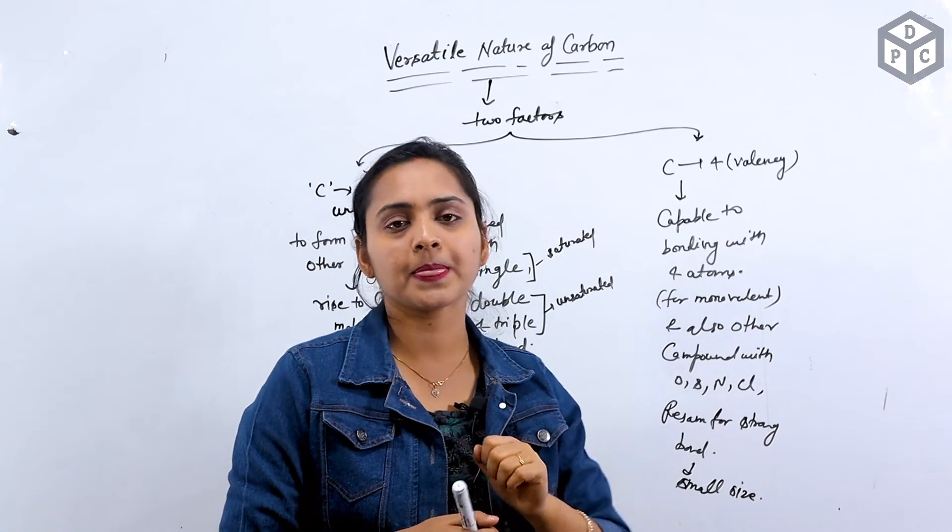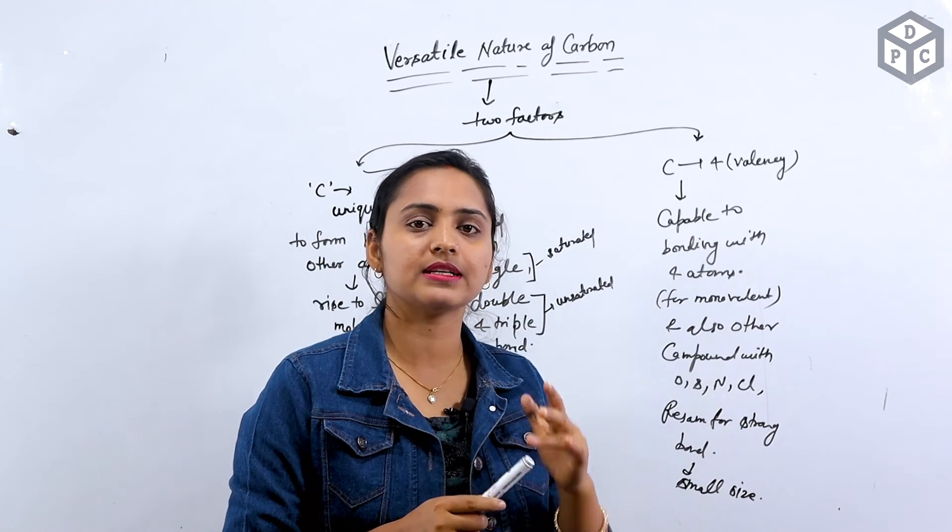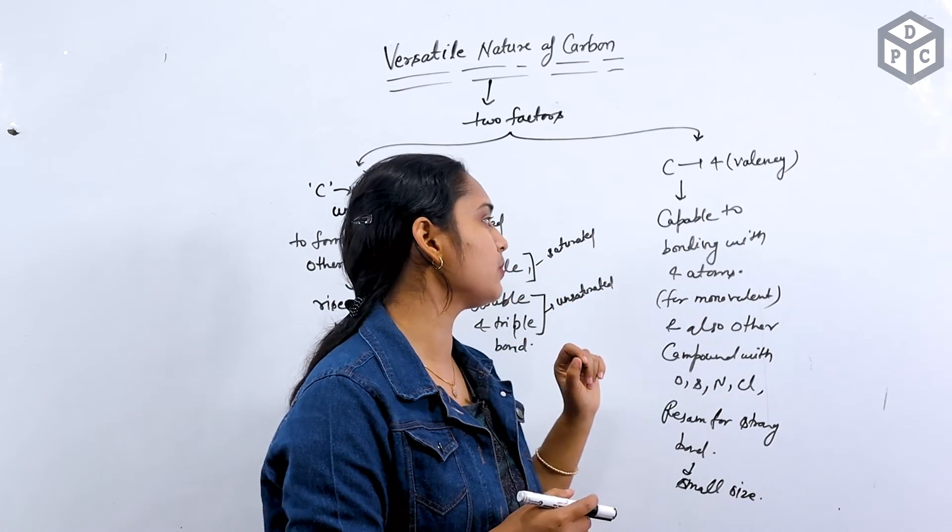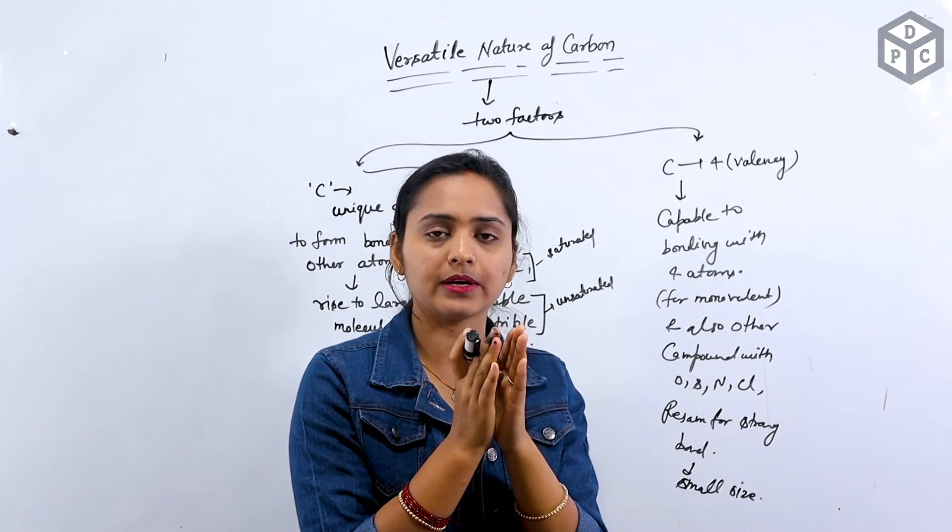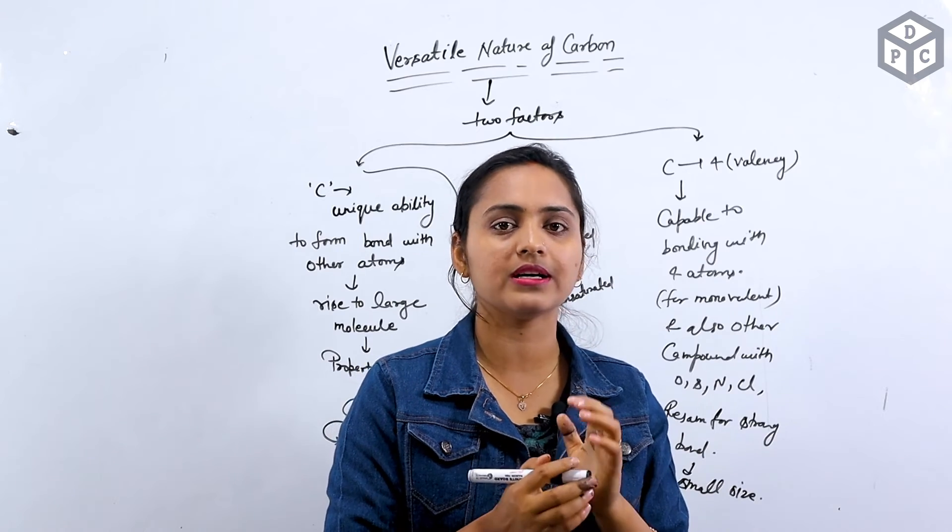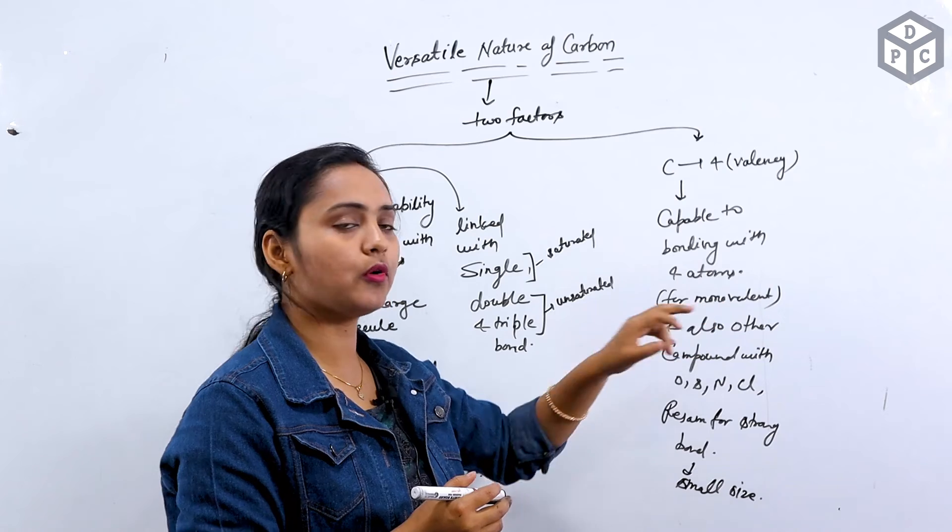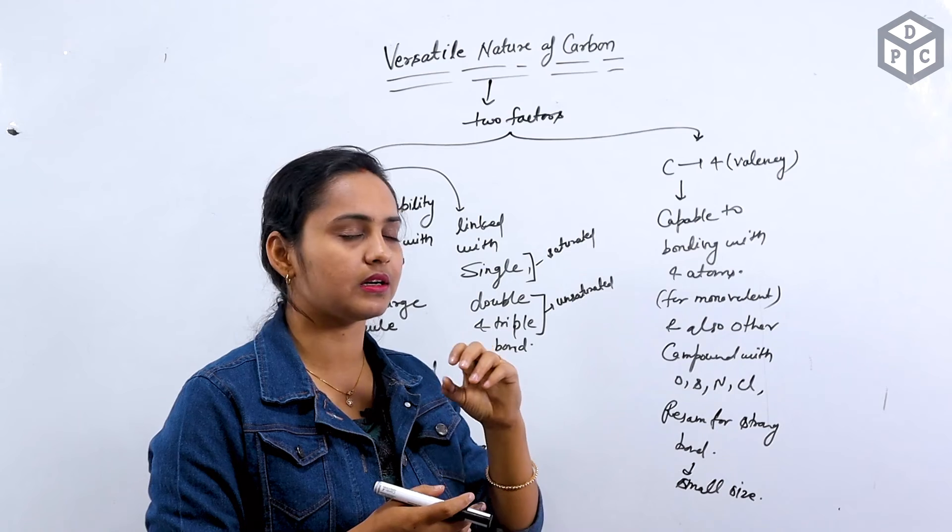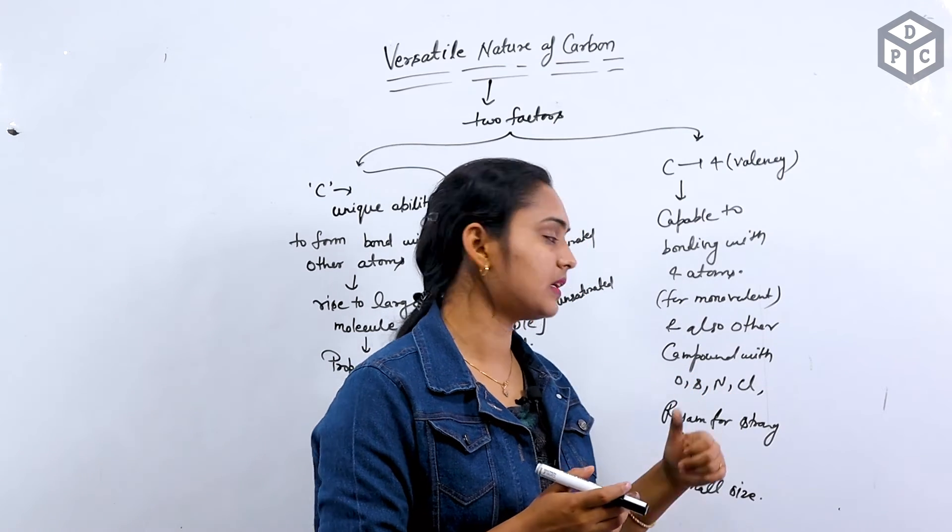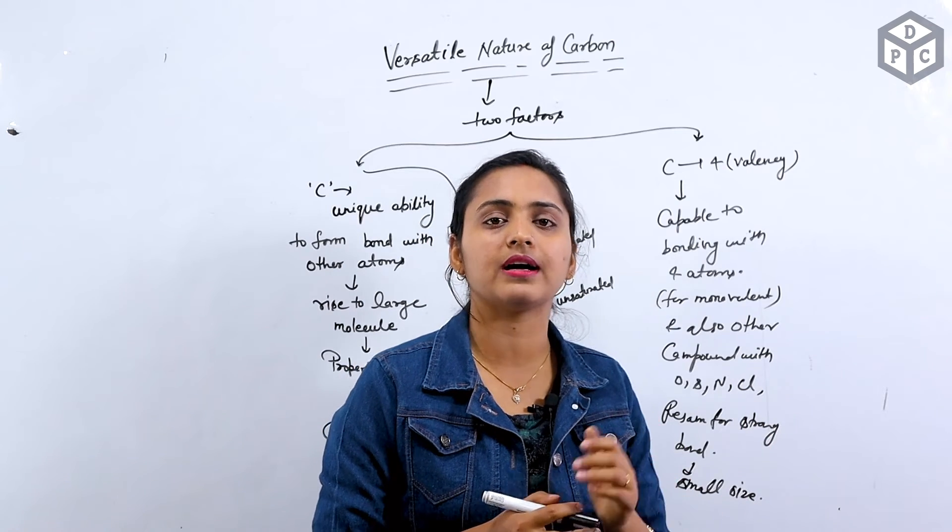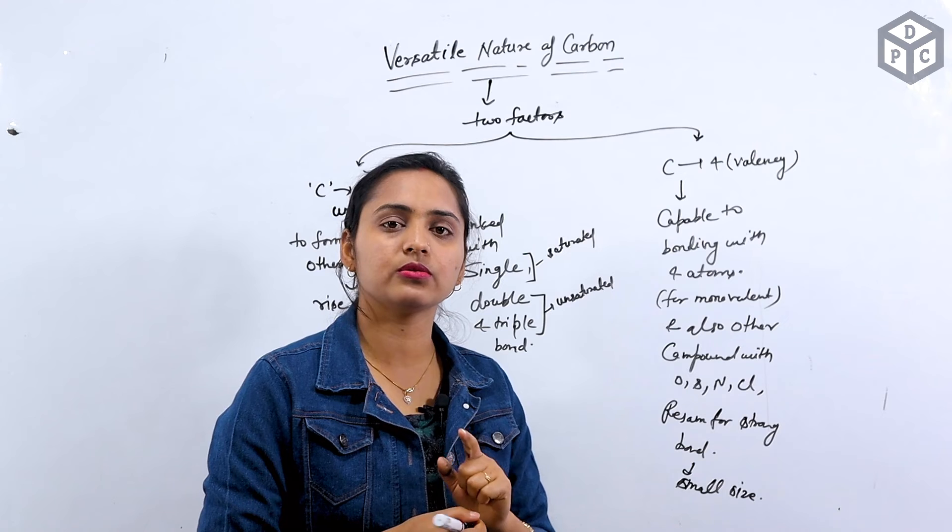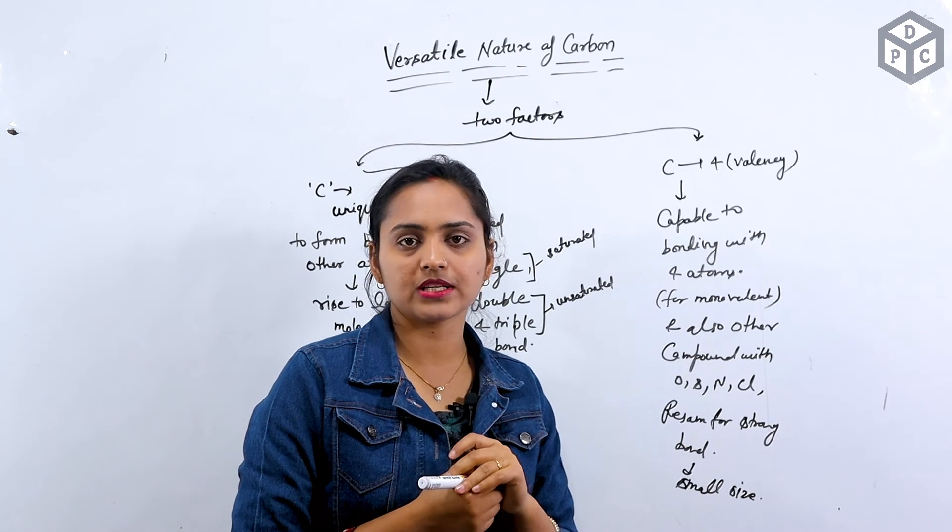The second property: carbon valence is 4 and silicon valence is also 4, but the size of carbon is small. So when the size is small, then the bonding will be strong bonding. When the bond is strong, it is capable of bonding with 4 atoms for monovalent hydrogen and other elements with single, double bond and triple bond. Why is strong? Small size.